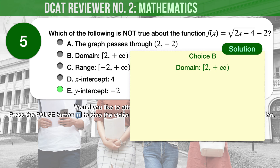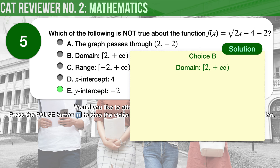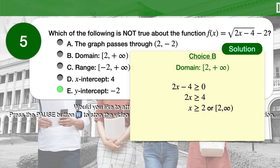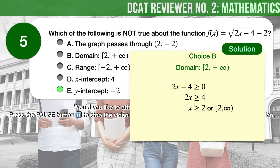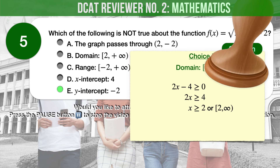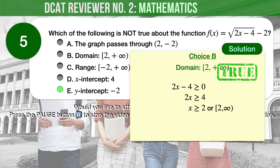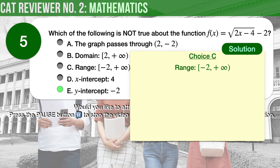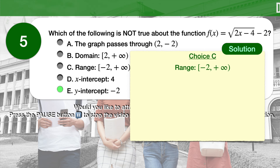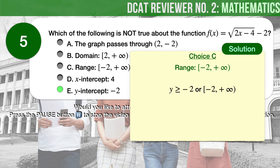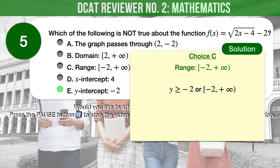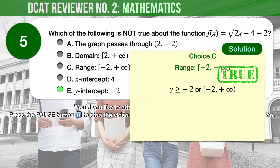Choice B: the domain is the interval from 2 to infinity, excluding infinity. With 2x minus 4 greater than or equal to 0, we determine that x is greater than or equal to 2. That is, the domain is the interval from 2 to infinity, excluding infinity. Therefore, choice B is true. Choice C: the range is the interval from negative 2 to infinity, excluding infinity. We can resolve y to be greater than or equal to negative 2, so the range is negative 2 to infinity. Therefore, choice C is also true.